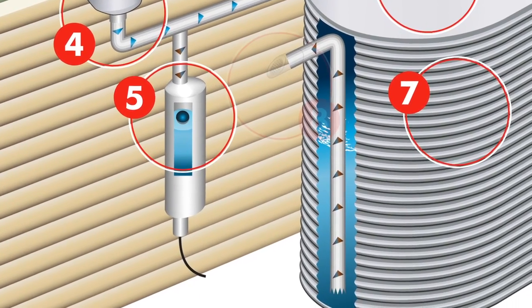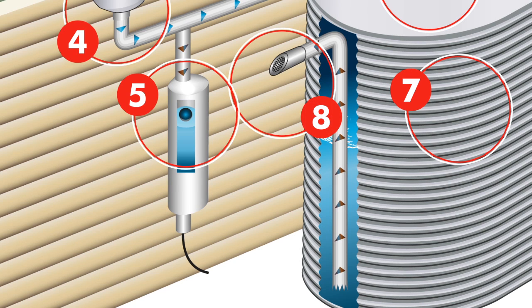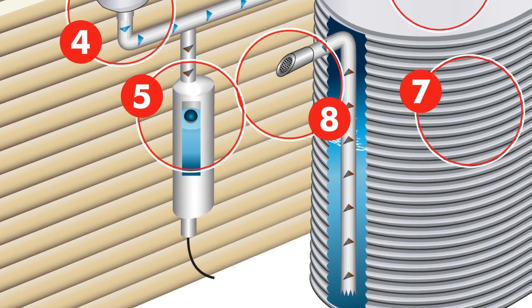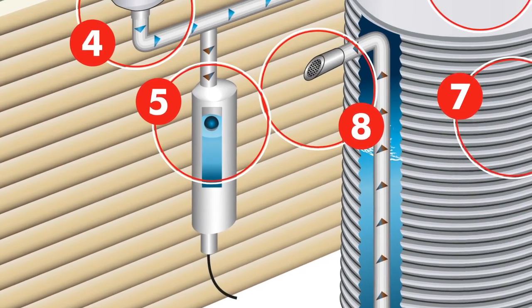Attach insect proof screens or flap valves to the end of all pipes to keep mosquitoes and pests out and ensure the tank is vented properly.